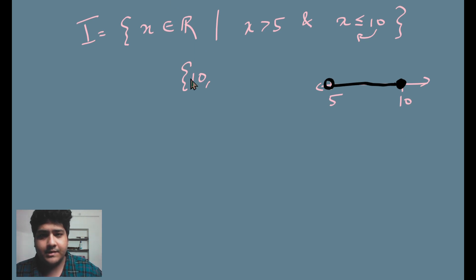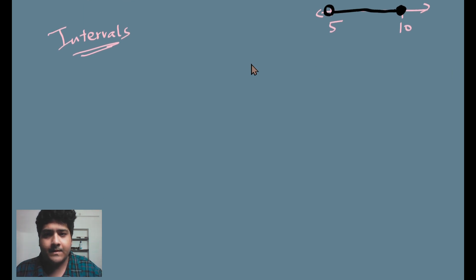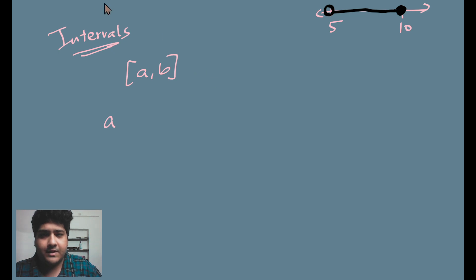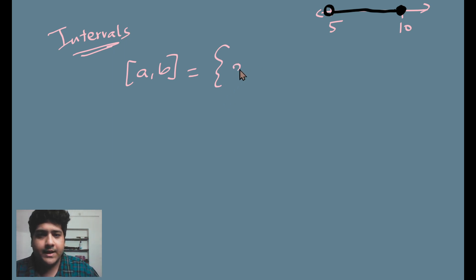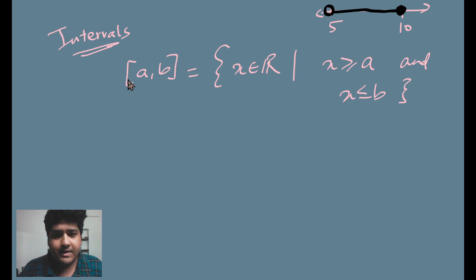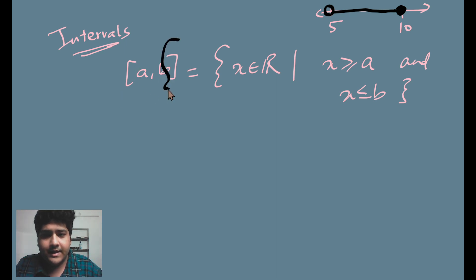We need a symbolic depiction for the set, so let me define something called intervals — that's why I named it I for intervals. An interval [a, b] is a subset of R defined in set builder form as: the set of all X belonging to R such that X is greater than or equal to A and X is less than or equal to B. The square brackets denote that A and B are included.